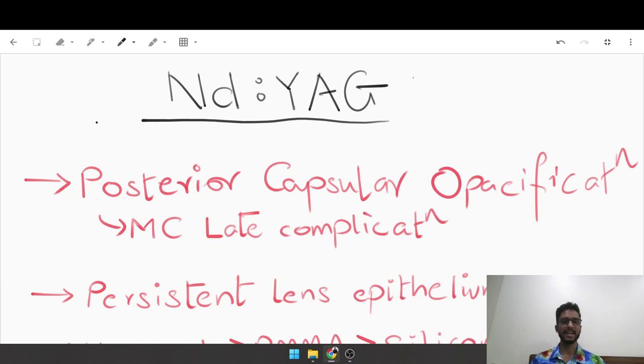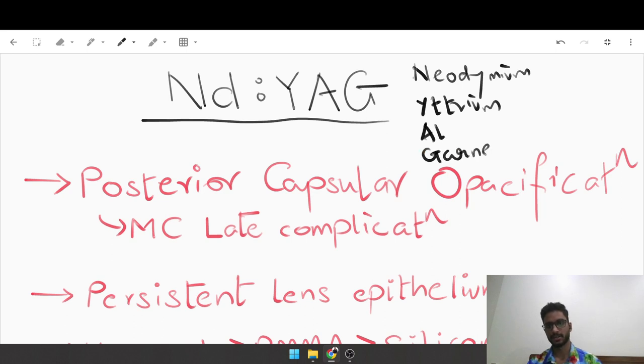Let's talk about the ND-YAG laser today. ND-YAG stands for neodymium yttrium aluminum garnet. It's a type of laser with a wavelength of 1064 nanometers, and there are two primary ophthalmological uses: one is to treat posterior capsular opacification, and secondly it is used for peripheral iridotomy.